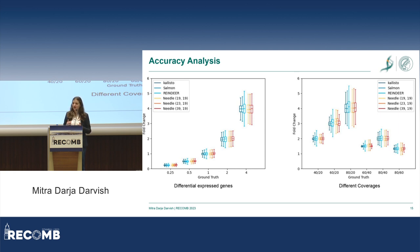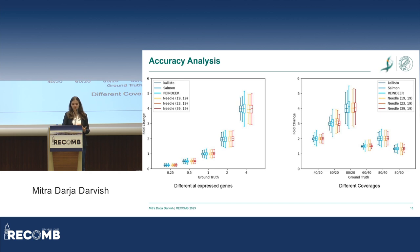You see the fold change that we expect is the same across all tools. We get similar results to Kallisto and Salmon — sometimes our variance is a bit higher.